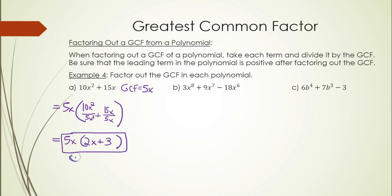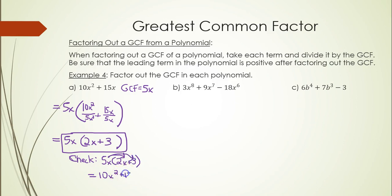We can check this by redistributing: 5x times 2x is 10x², and 5x times 3 is 15x — which matches the original expression. This is a way to verify that you factored out the greatest common factor correctly.